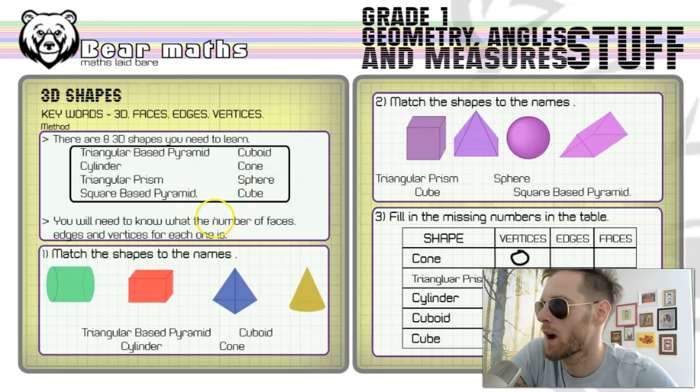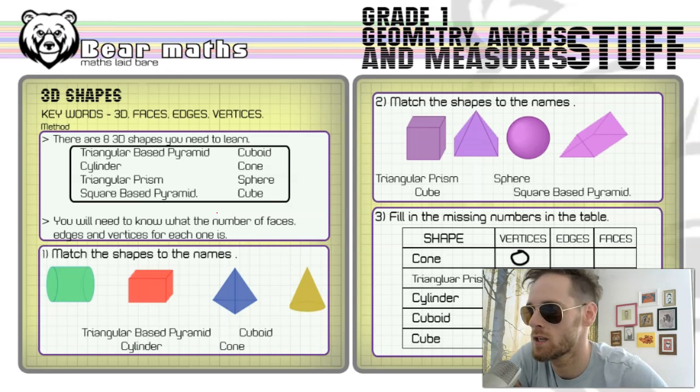There are eight 3D objects you need to learn the names of. They are triangular based pyramid (which could be referred to as a regular tetrahedron), cuboid, cylinder, cone, triangular prism, sphere, square based pyramid, and cube. You'll need to know the number of faces, edges, and vertices for each one. Then you'll be able to use that understanding to answer more complicated problems later on.